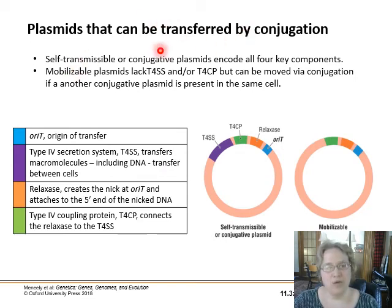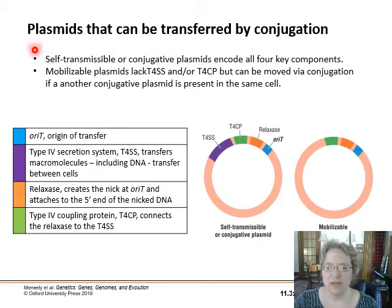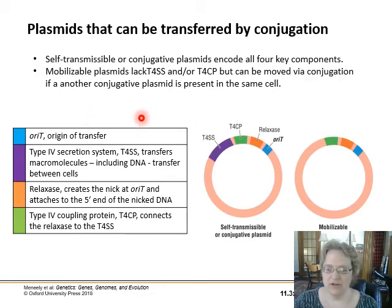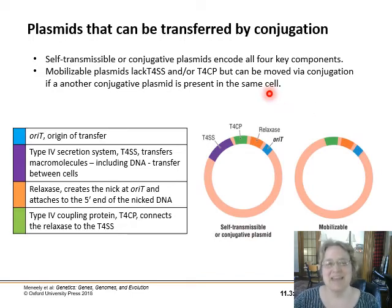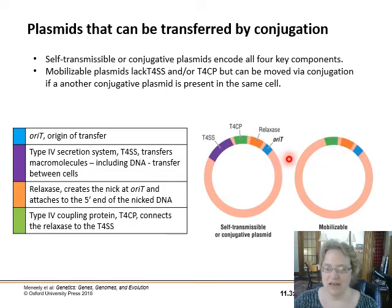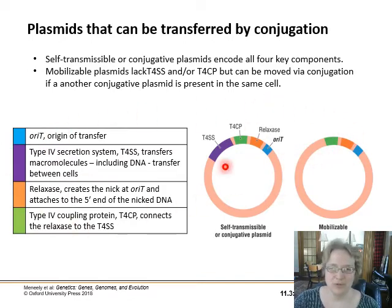Not all plasmids can undergo conjugation. The ones that can are called self-transmissible or conjugative plasmids, and they need four components to be able to move. Some plasmids can move via conjugation and some cannot because they're missing part of this system. Just know that they can or cannot move based on whether or not they have everything they need.